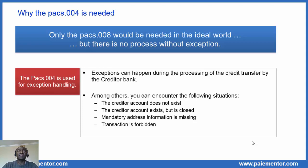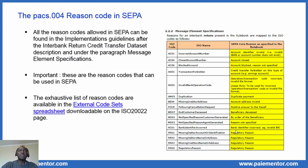This brings us to the PAX4 reason codes. In the SEPA implementation guidelines, you find all the reason codes that are allowed in SEPA. They can be found under the Interbank Return Credit Transfer Dataset Description and under the paragraph message element specifications. It is important to note that these are the reason codes that can be used in SEPA. The exhaustive list of reason codes used in ISO 20022 are available in the external code set spreadsheet.